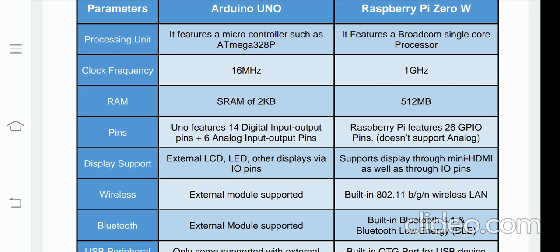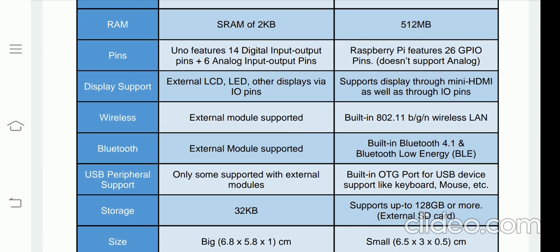For display support, Arduino supports external LCD, LED, or other displays via IO pins. If you want to connect a display to your Arduino, you have to connect it using the IO pins. In the case of Raspberry Pi, you can connect the display using the HDMI port. We used an HDMI converter — a VGA to HDMI converter — to connect the display to the Raspberry Pi.